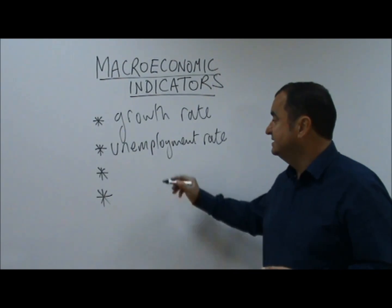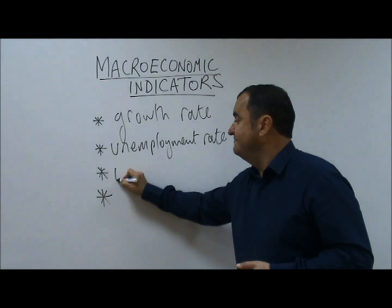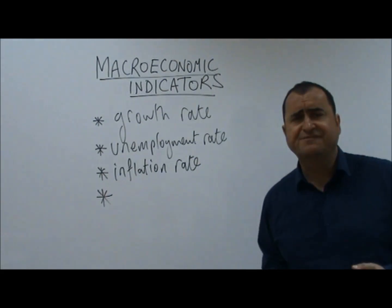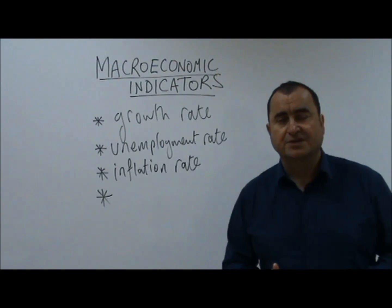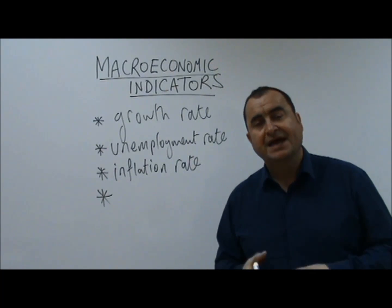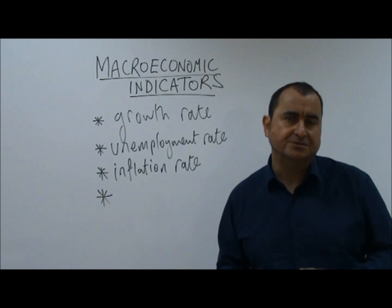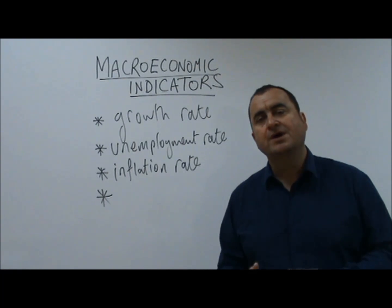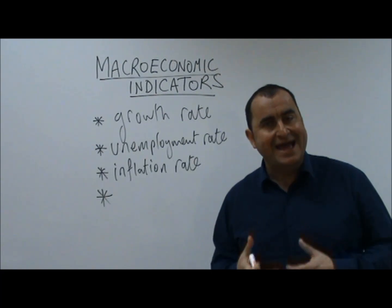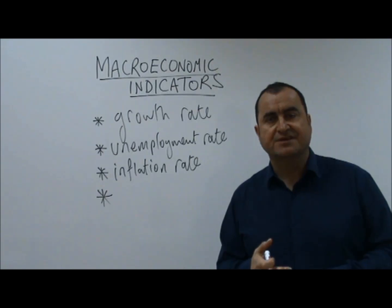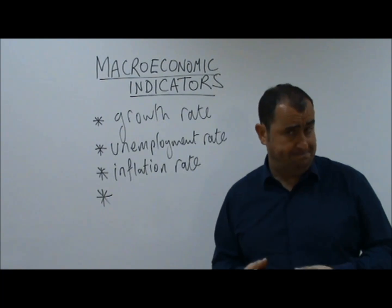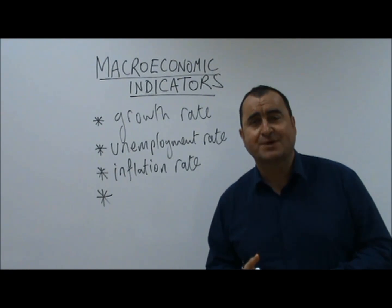A third indicator is the inflation rate, which measures the speed at which the average price level in the economy is rising. Normally it is rising, and governments have an objective of keeping inflation under control. Most governments aim for targets of about 2%, because they feel that is the healthiest level for their economy. As of early 2015,